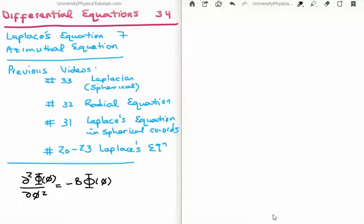Video 33 I derived the Laplacian in spherical coordinates and in video 32 I solved the radial equation which was a product of video 31 where I moved Laplace's equation from its rectangular coordinates to spherical coordinates and then applied the method of separation of variables where I broke the solution of three variables into a product of three single variable functions. When I plugged this into the actual Laplace's equation we got instead of a partial differential equation three ordinary differential equations.